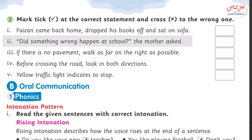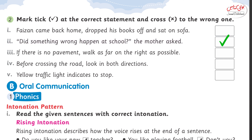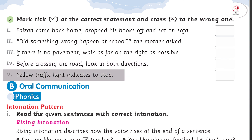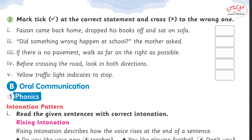Number two: did something wrong happen at school? The mother asked. It is incorrect. Number three: if there is no pavement, walk as far on the right as possible. That is a correct statement. Number four: before crossing the road, look in both the directions. That's correct. Number five: yellow traffic light indicates to stop. Now that is a wrong statement.